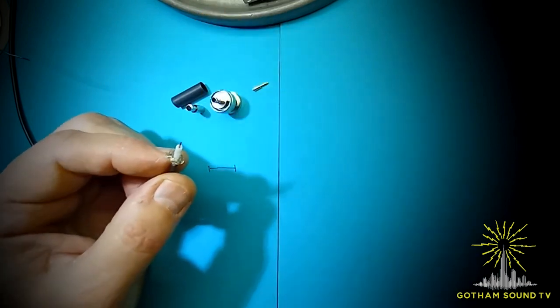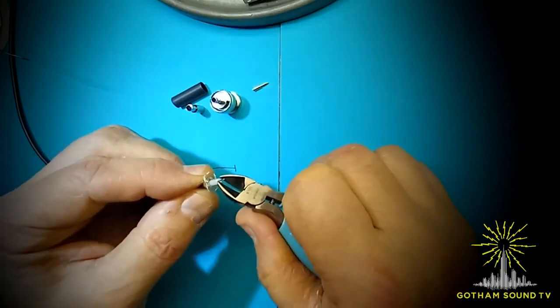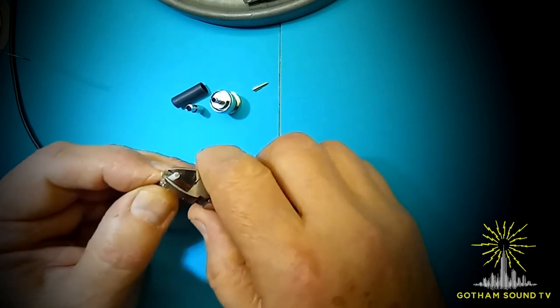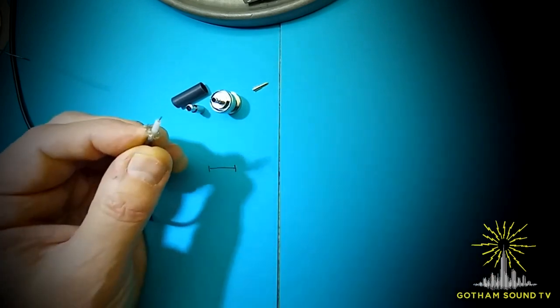Then insert the plastic insulation all the way down. Put the pin on and crimp it.